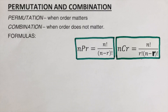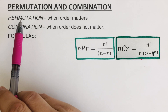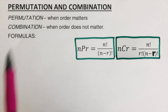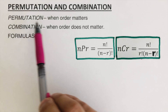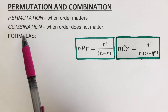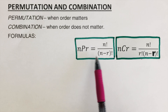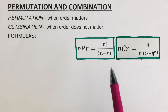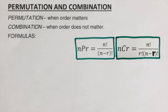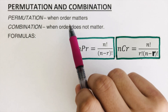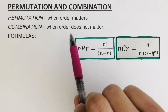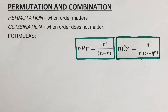Hello everyone, today we will be doing permutation and combination. We have here the definition for both. We use permutation whenever order matters, and combination when order does not matter. We have the formulas for permutation and combinations. Before we jump into these formulas, let's have an illustration first to better understand what permutation and combination mean.